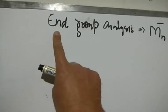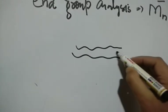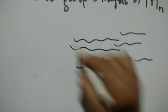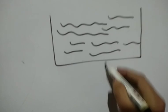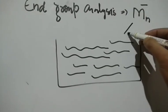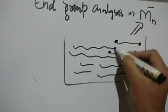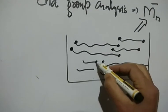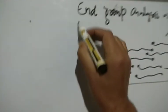End group analysis is a method by which we can calculate the number average molecular weight. We have a polymer sample which has many chains. What we do in this method is make use of the end groups in the polymer chains — the groups present at the ends of polymer chains help us calculate the number average molecular weight.